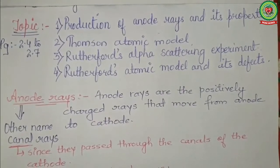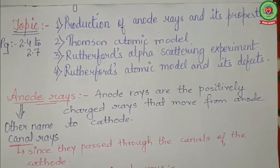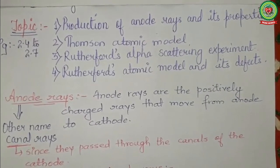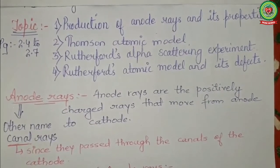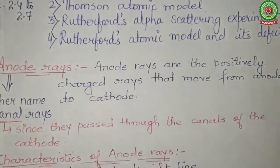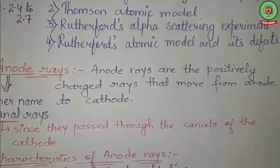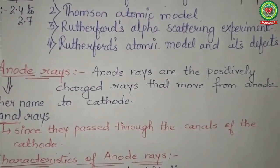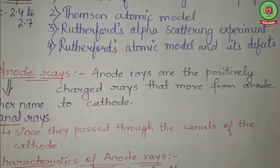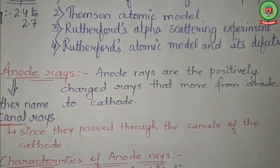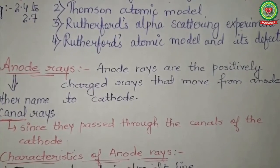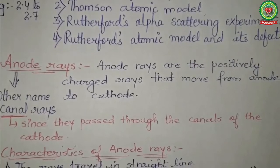Defining anode rays: as cathode rays are the negatively charged rays that move from cathode to anode, similarly anode rays are the positively charged rays that move from anode to cathode. They were also known as canal rays, because since the cathode was perforated, these rays passed through the canals of the cathode.